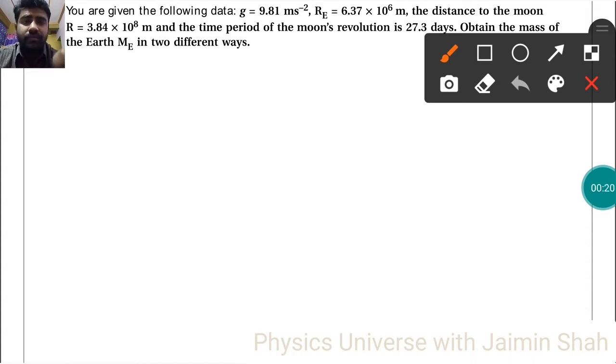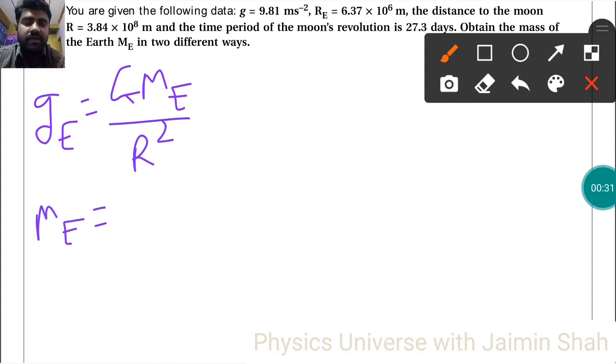First of all, gravitational acceleration gE is equal to GME upon R square. So by solving for ME, we get ME equals gE R square upon G.